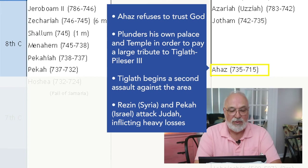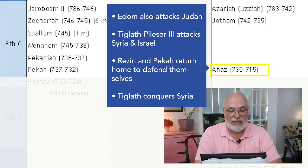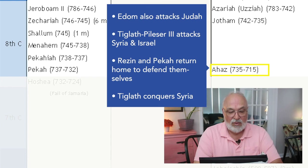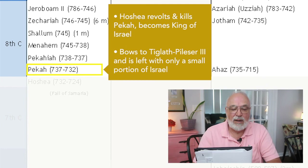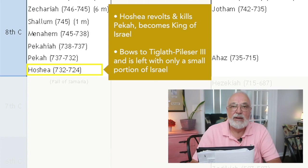Tiglath-Pileser III begins a second assault against the area. Rezin and Pekah attack Judah, inflicting heavy losses. Edom also attacks Judah in her weakness. Tiglath-Pileser III then attacks Syria and Israel. Rezin and Pekah return home to defend themselves. Tiglath-Pileser III conquers Syria. In the northern kingdom, Hosea revolts and kills Pekah and becomes king of Israel. Hosea bows to Tiglath-Pileser III and is left with only a small portion of his new kingdom.